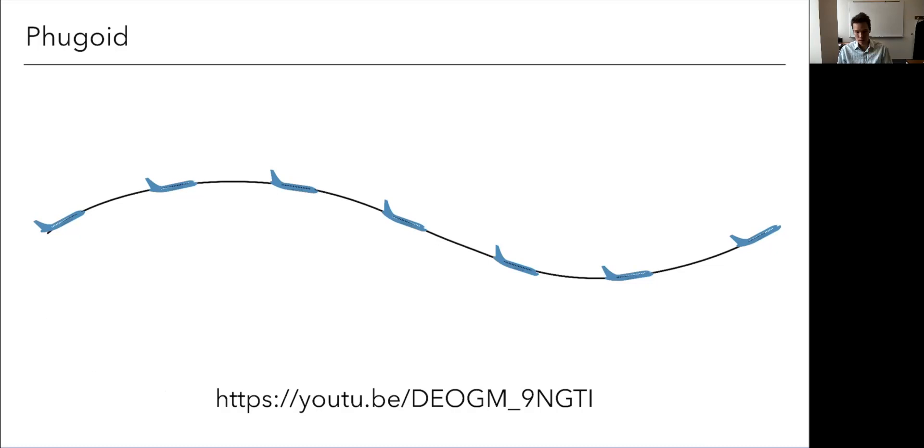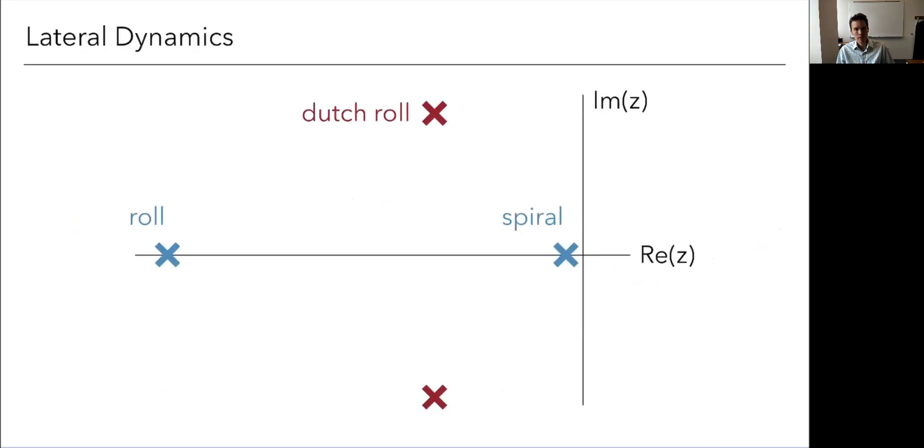Okay. So those are the longitudinal modes. And now let's talk about the lateral modes. Here's the lateral modes. Notice that we have one complex conjugate pair. So there's going to be an oscillatory mode, but now we have two real modes. These ones have no imaginary component. So no oscillation. There's a roll mode, which has a really high damping. And then a spiral mode, which generally has very low damping and sometimes is even unstable.